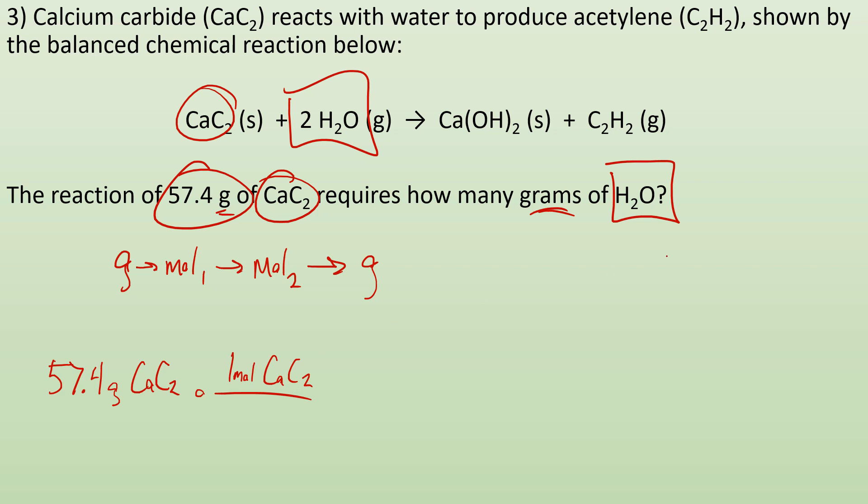Calcium. Each calcium is like 40 points something. And I add them together. I get 64.10 as my molar mass. So my grams of calcium carbide cancel out. Now I got moles of calcium carbide.